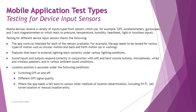Testing for different device input sensors will check that the app works as intended for each available sensor, provided your application is interacting with them. For example, apps need to be tested for various types of motion such as circular motion and backward-and-forth motion like walking, to ensure it correctly counts your steps.